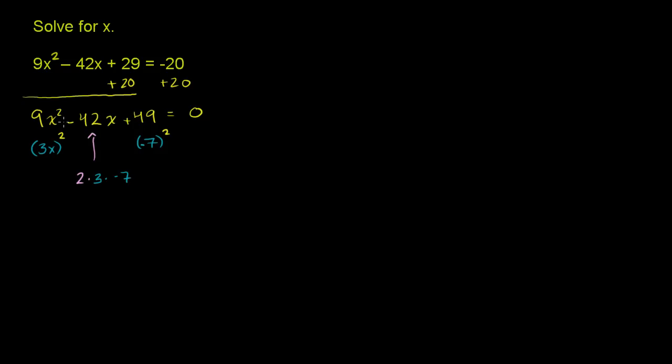So the left-hand side of this equation, we can write as (3x - 7)(3x - 7), or (3x - 7)² = 0.